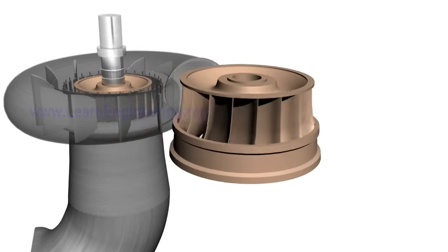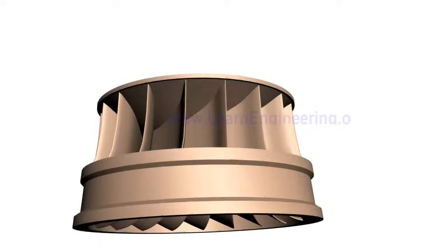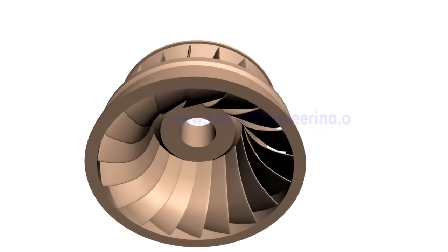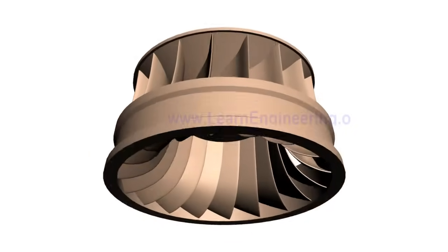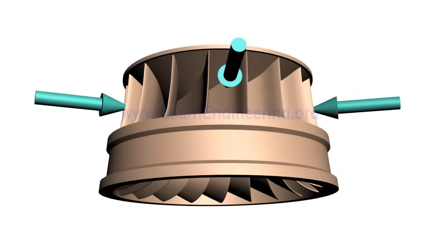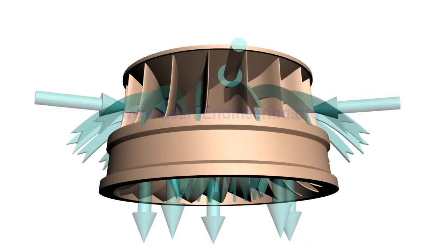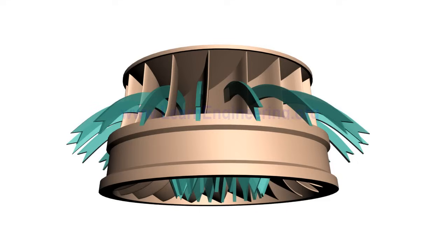The most important part of the Francis Turbine is its runner. It is fitted with a collection of complex shaped blades. In the runner, water enters radially and leaves axially. During the course of flow, water glides over runner blades.